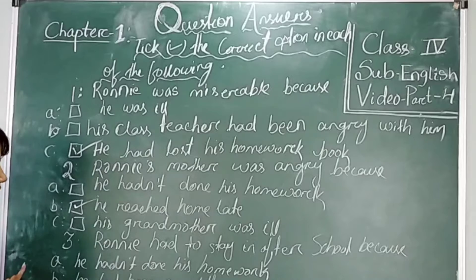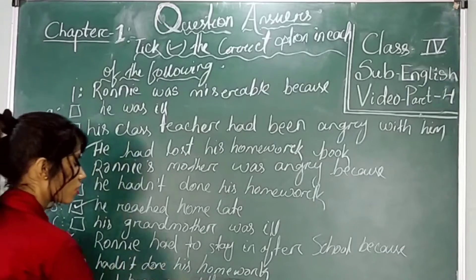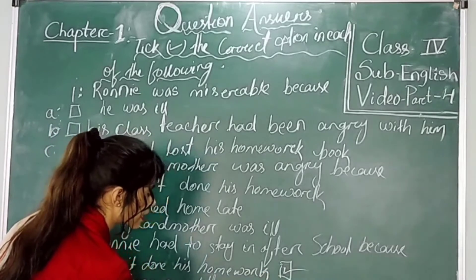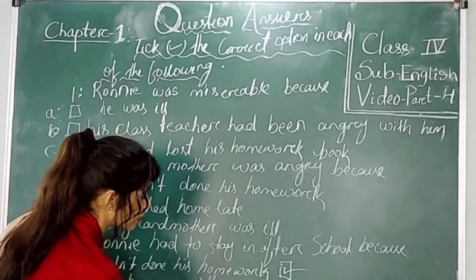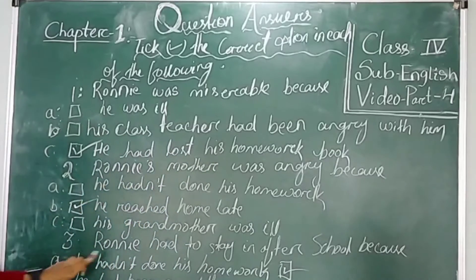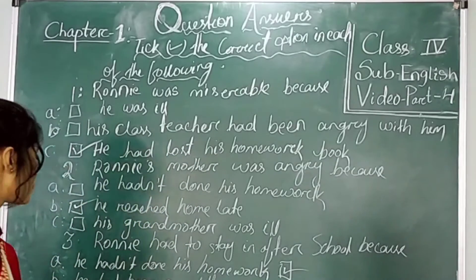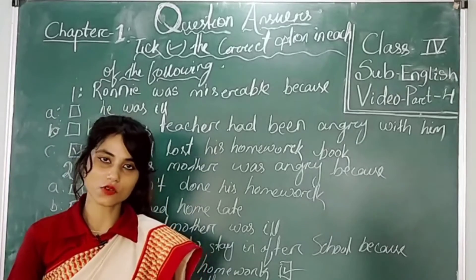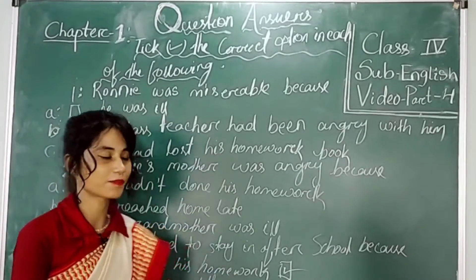Option C — he has told a lie — this is false. Number A, option 1 is correct, option 2 is wrong. So Ronin had to stay in after school because he has not done his homework. That's it.